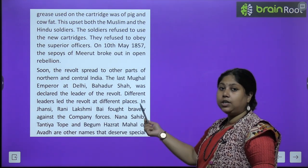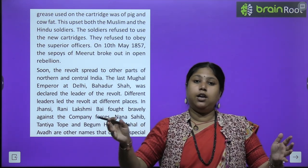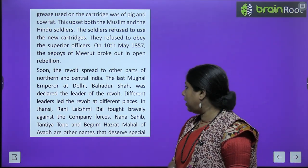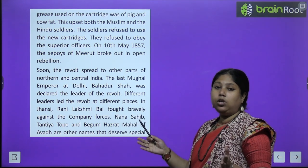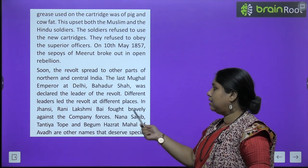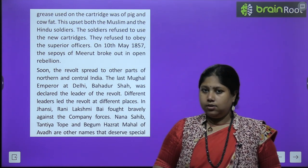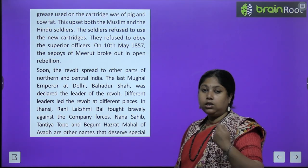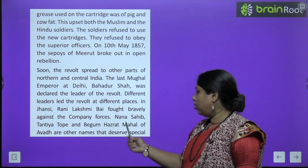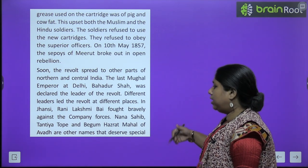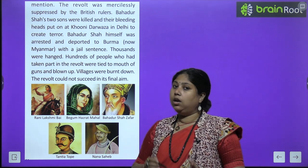Just as fire spreads smoke everywhere, the revolt spread from Meerut to surrounding cities and then to different regions. The last Mughal Emperor at Delhi, Bahadur Shah Zafar, was declared the leader of the revolt. Different leaders led the revolt at different places — from Jhansi, Rani Laxmibai fought very bravely against the British. Similarly, Nana Sahib, Tatya Tope, and Begum Hazrat Mahal from Awadh — leaders from different parts of India started fighting against the British, and their contributions are remembered to this day.